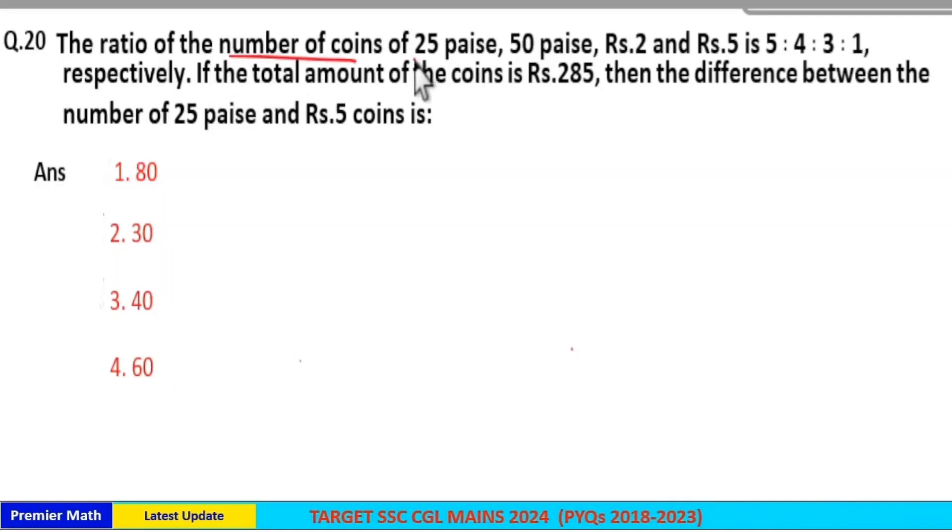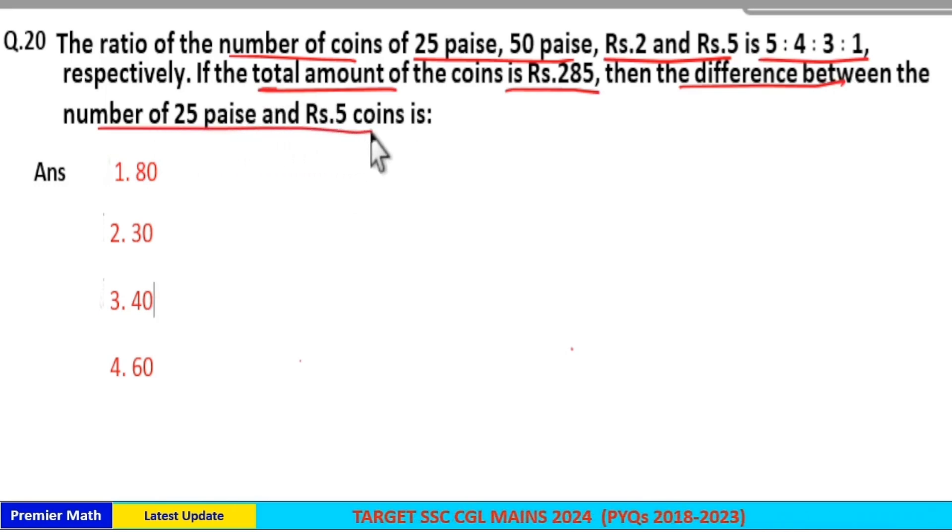The ratio of number of coins of 25 paise, 50 paise, rupees 2 and rupees 5 is 5:4:3:1. If the total amount of coins is rupees 285, then the difference between number of 25 paise and rupees 5 coins is: